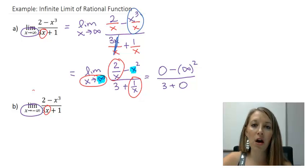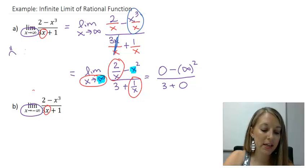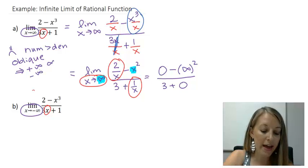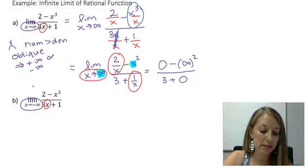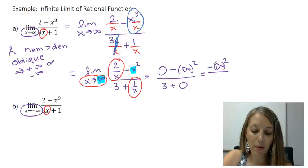At this point, I can figure out what my answer is. Remember this is sad face case because my numerator degree is greater than my denominator degree. That means I have an oblique asymptote left. That means my answer has got to be either positive infinity or negative infinity. I just have to figure out which one it is. So on the top, I have negative infinity squared left, and in the bottom I have 3.